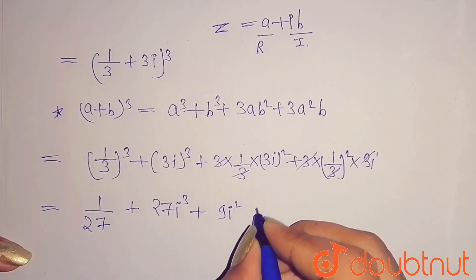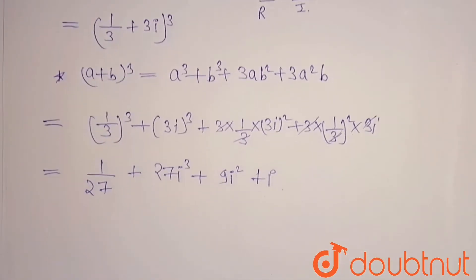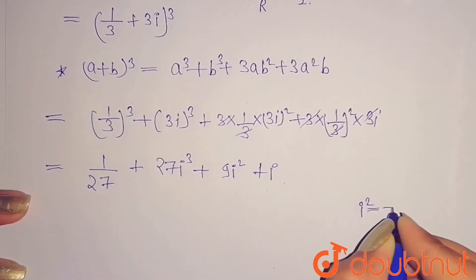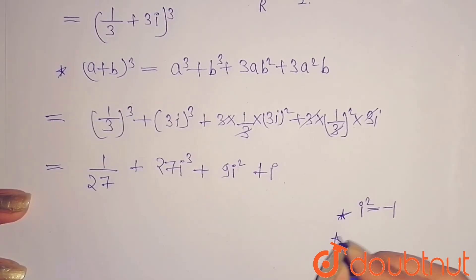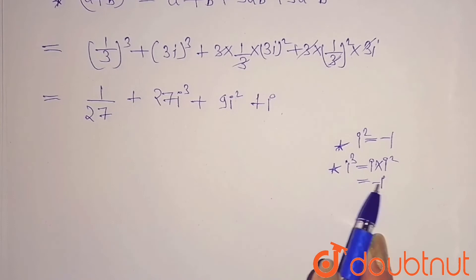Now there is a basic thing we know that i² equals -1. So i³ can be calculated as i × i², and i² is -1, so you will get -i. It means i³ = -i and i² = -1.